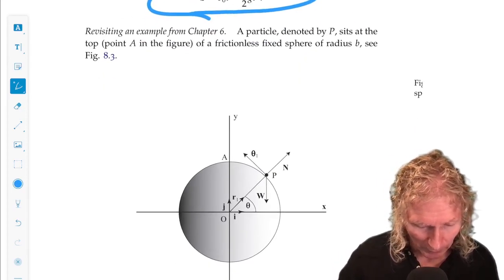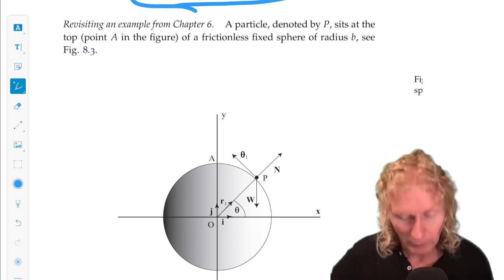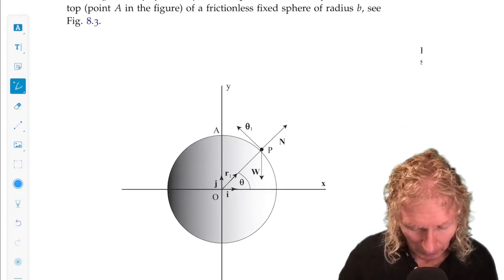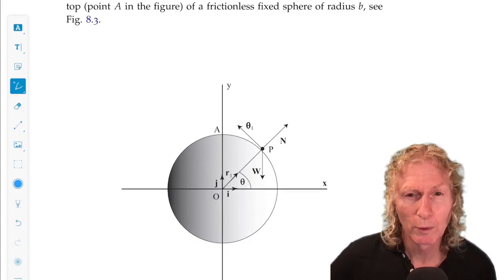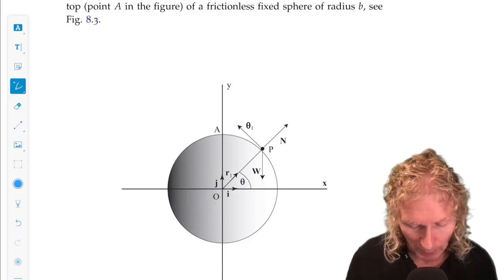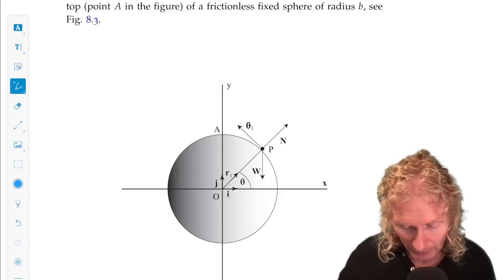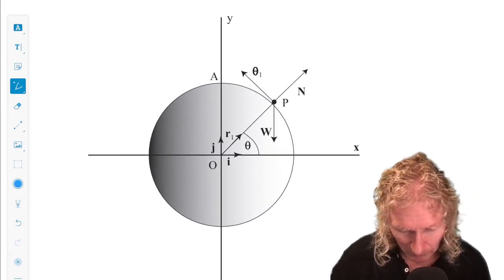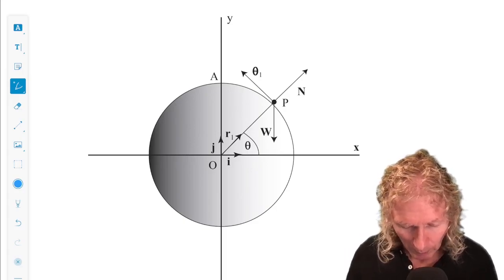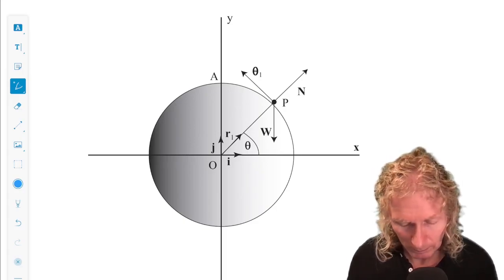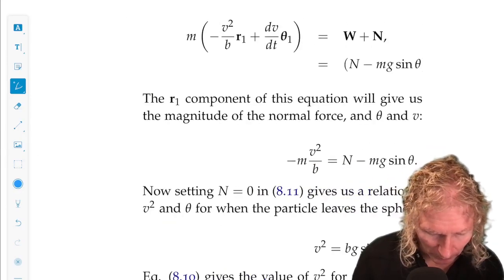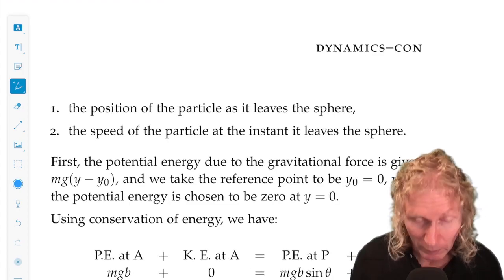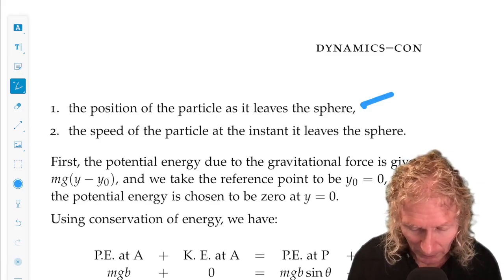Let's turn to another example from chapter 6. This is the particle mass m moving on a sphere, or in this plane. A circle. The only force acting on the particle is gravity. It starts at the top. We displace it slightly, and it slides down. We take this as a coordinate system. Polar coordinates, r1 and theta 1. What are the questions? Same questions as before. We're going to find the position of the particle as it leaves the sphere, and the speed of the particle at the instant it leaves the sphere.